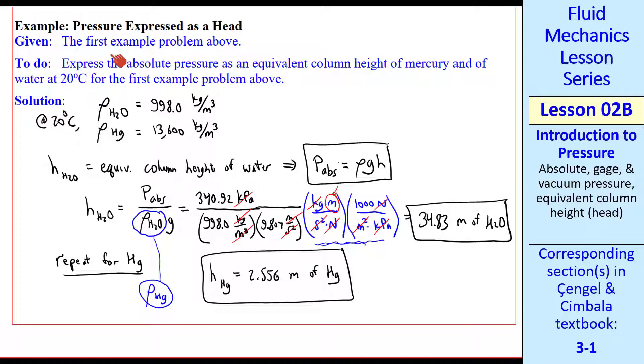One final comment. We never said anything about the fluid in this particular flow. It could be water. It could be mercury. It could be air. It could be any kind of fluid. We can always pick a fluid that we express an equivalent column height or a head. Here we used mercury and water. Sometimes certain alcohol solutions are used as column heights.